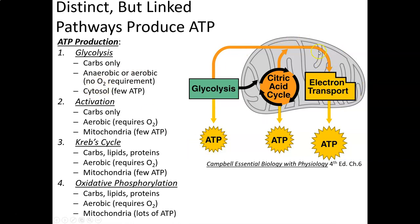Looking at this figure, the mitochondrion is shown in gray, and outside the mitochondrion is the cytosol. If glycolysis happens, we end up with two pyruvate molecules. We can activate those and make acetyl coenzyme A to go into the citric acid cycle. If we do that and go into the mitochondria to make energy, oxygen must be available — so this is an aerobic pathway.